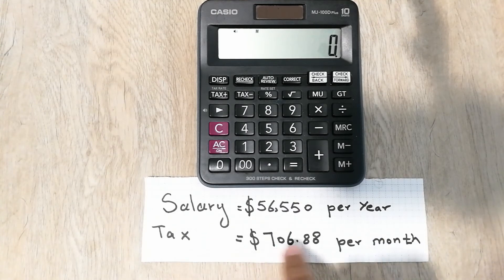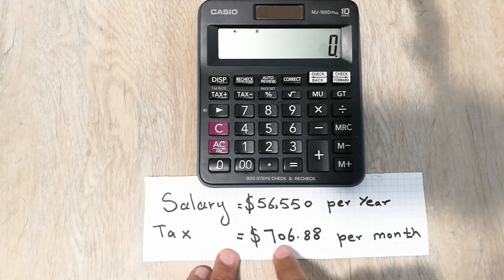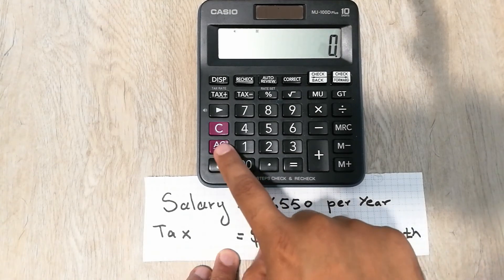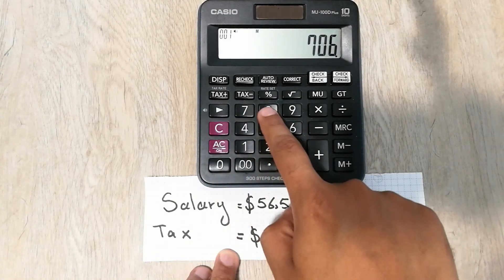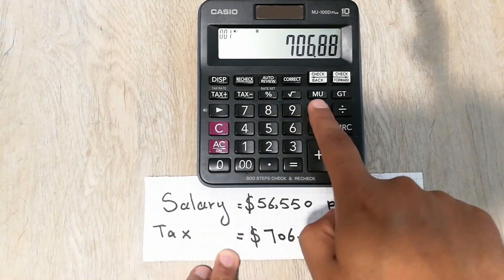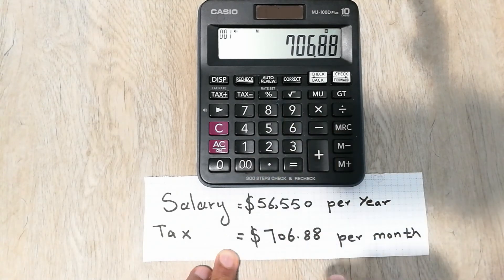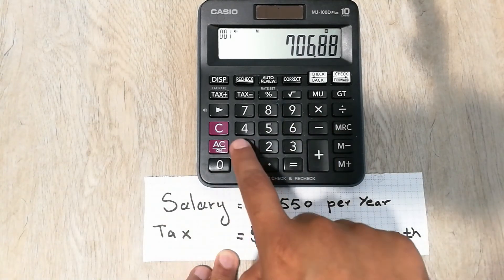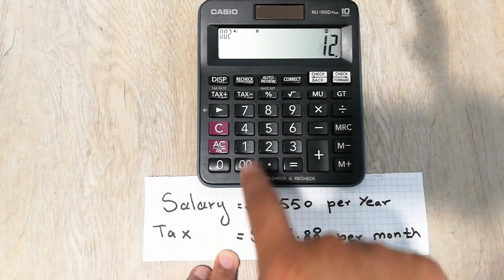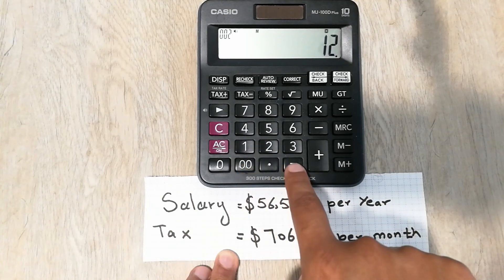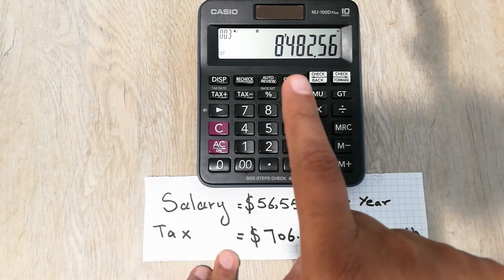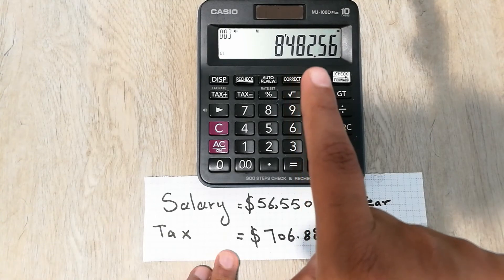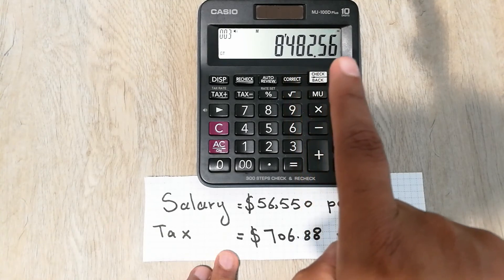Simply, first type seven hundred and six point eight eight, which is your monthly tax, and multiply it with twelve because there are twelve months in one year. Our answer is eight thousand four hundred and eighty-two point five six.